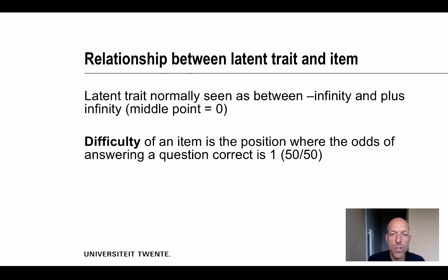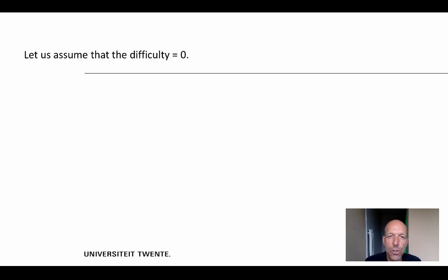Okay, so the odds is 1, and the difficulty refers to that specific position. Now let us assume that the difficulty of a specific item is zero. Okay, what does it look like?